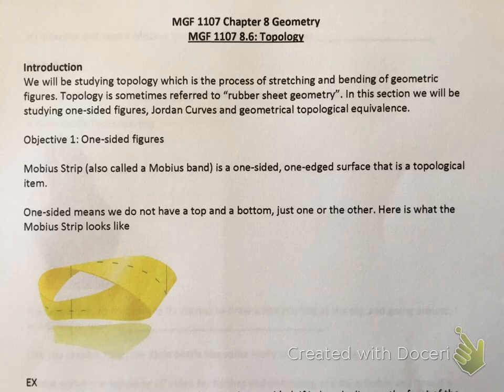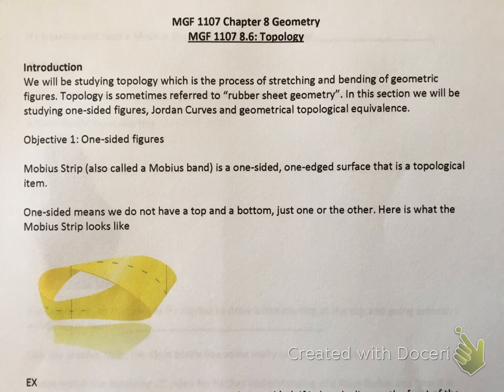This is chapter 8 geometry, section 8.6, which covers topology — really cool and interesting. In this section there are several videos embedded in your notes. My advice is to go to the hyperlinks in the notes on Canvas and bring up the videos, ready to go. There's a video on the Möbius strip, one on the Klein bottle, and another on the Jordan curve — kind of an introduction to topology.